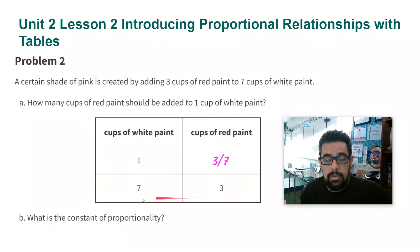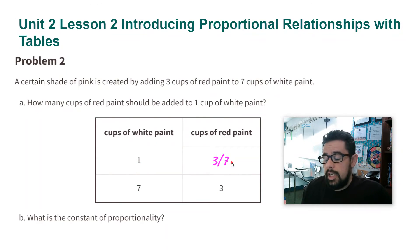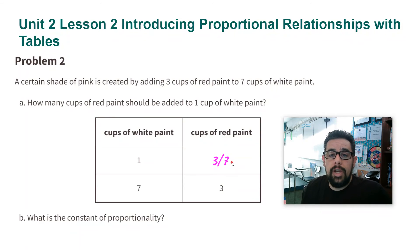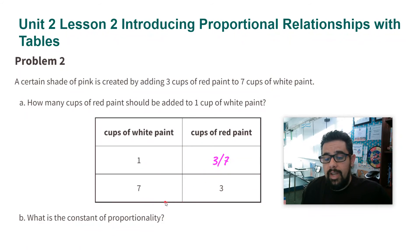Dividing seven by seven is one, and dividing three by seven is three over seven. If you do the division as a decimal it's going to be a long repeating decimal, so we're just going to leave it as a fraction — that's all we need to know. I got these numbers by dividing by seven.